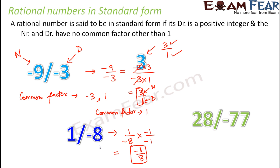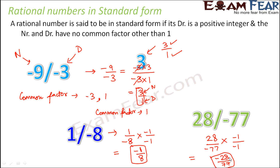Consider 28 by minus 77. The denominator is negative, so we need to make it positive by multiplying numerator and denominator by minus 1, giving minus 28 divided by 77. The factors of 28 and 77 have no common factor except 1, so this is the standard form. Any rational number is in standard form if it cannot be reduced further — the numerator and denominator have no common factors except 1.